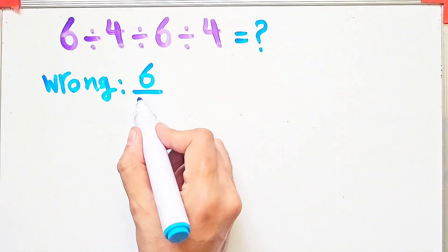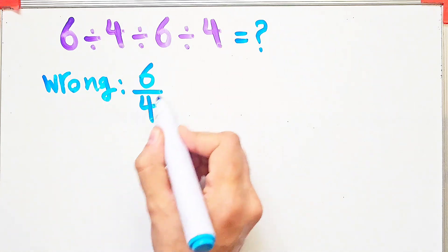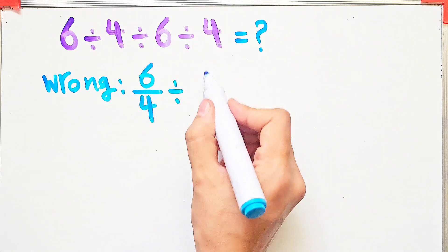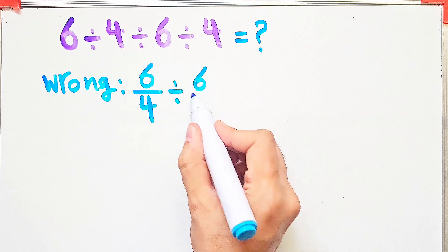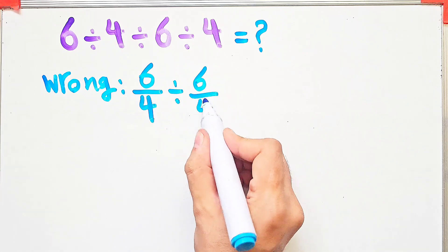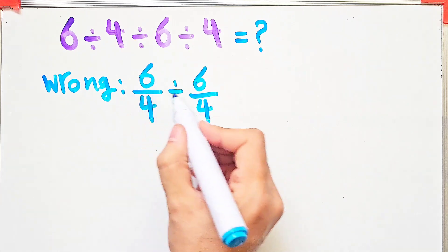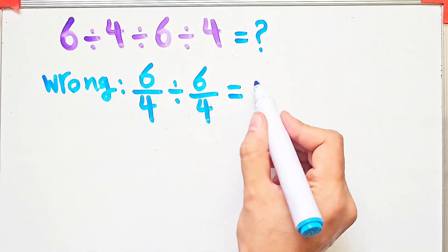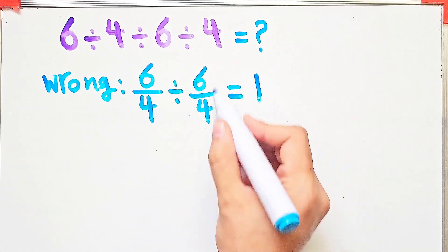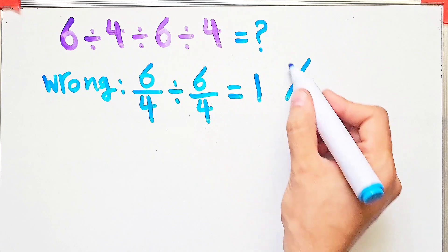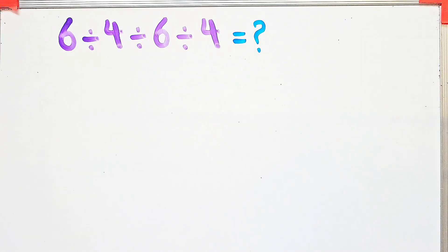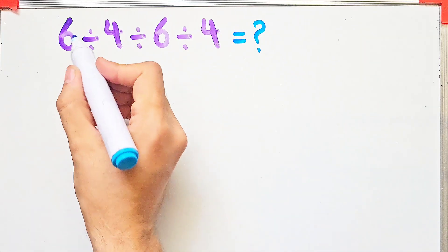by four equals six over four, and after that they do this division: six divided by four equals six over four. They say the final answer of this question equals one, but it's definitely wrong. Let's solve it step by step together.